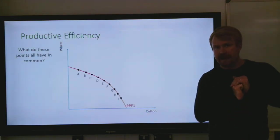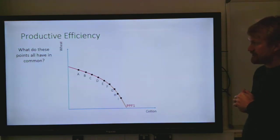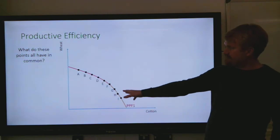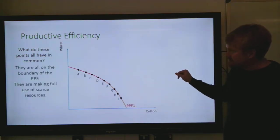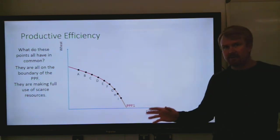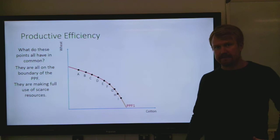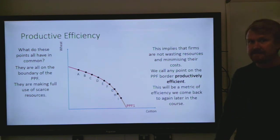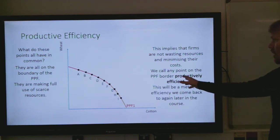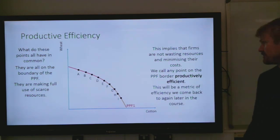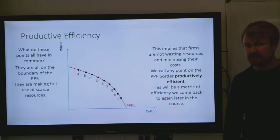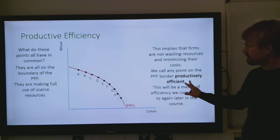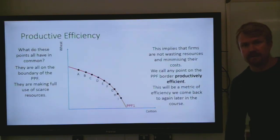The last thing to mention is productive efficiency. All points on the PPF boundary have in common the fact that the economy is making full use of its scarce resources — it implies firms are not wasting their resources and are minimizing their costs. We call any point on the PPF boundary productively efficient. One way of thinking about productive efficiency is that we are operating at the boundary of our PPF. We'll leave the rest for another short video.